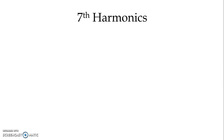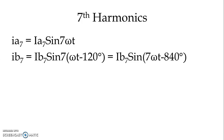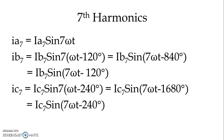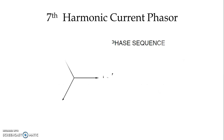Now let us check the expression for the seventh harmonic. Ia7 = Ia7 sin(7ωt). Ib7 = Ib7 sin(7ωt − 120°), which becomes Ib7 sin(7ωt − 840°) and simplifies to Ib7 sin(7ωt − 120°). Similarly, Ic7 = Ic7 sin(7ωt − 240°). Checking the current phasor we have A, B, C with counter-clockwise rotation, exactly equal to the fundamental waveform. Therefore, the seventh harmonic is a positive sequence harmonic.